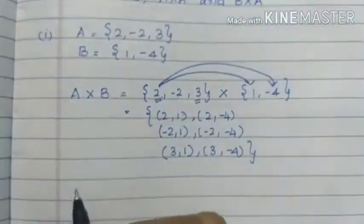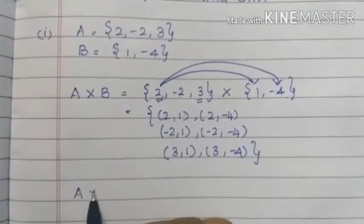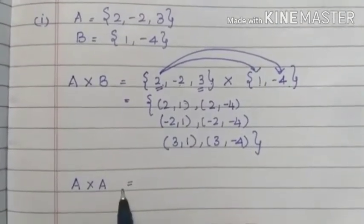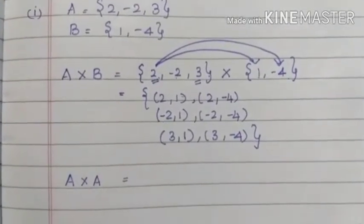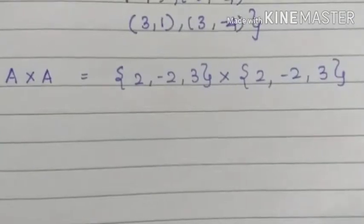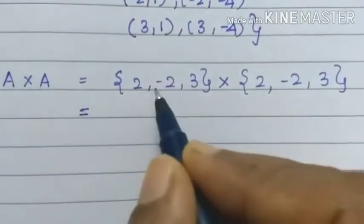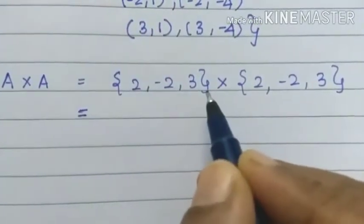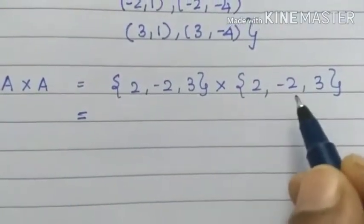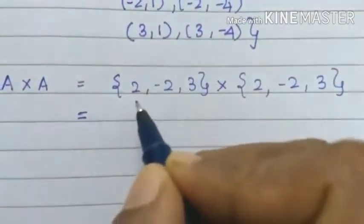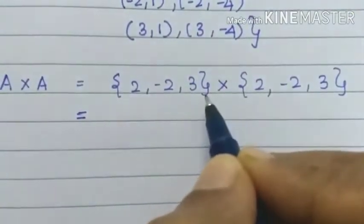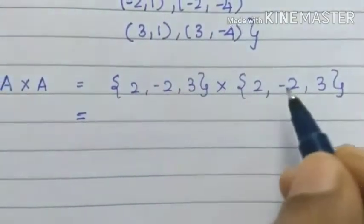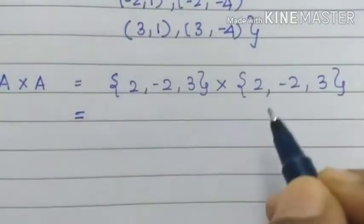Next, A cross A. That means A and A are multiplied. A cross A: A equals 2, minus 2, 3 into again A equals 2, minus 2, 3. So this total is 3 elements, and 3 into 3 is 9 elements.